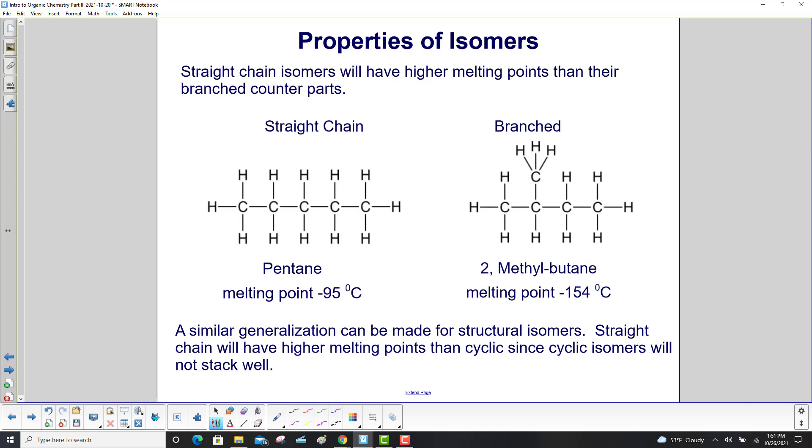Straight chain isomers will have higher melting points than their branched counterparts. Here's the straight chain. Melting point of pentane, minus 95 Celsius, and melting point of methylbutane, minus 154 Celsius. A similar generalization can be made for structural isomers. Straight chain will have higher melting points than cyclic since cyclic isomers will not stack well.